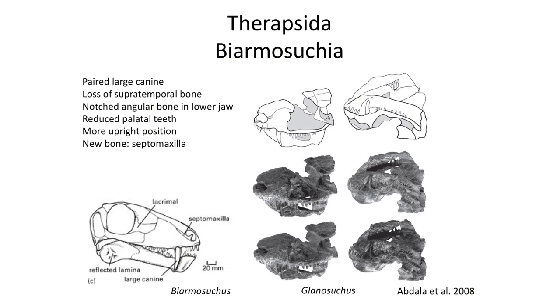The next group of Permian synapsids is a large monophyletic group called the Therapsida, which include a number of more advanced features, including large paired canine teeth. These are teeth that are distinct from other teeth in the tooth row. Large canines would be something we will see repeated in the evolution of mammals.